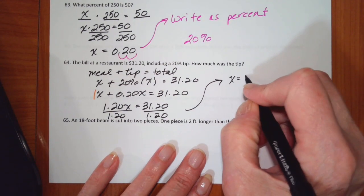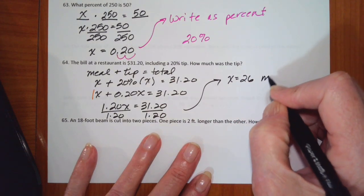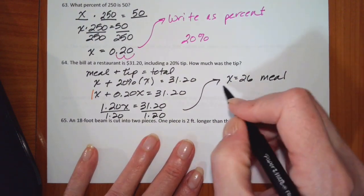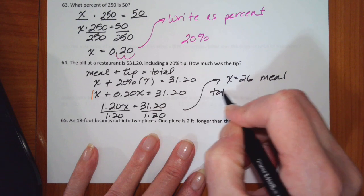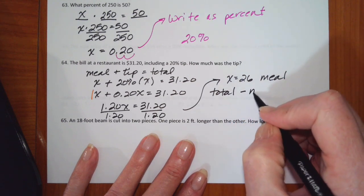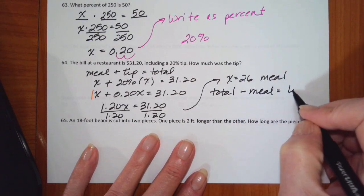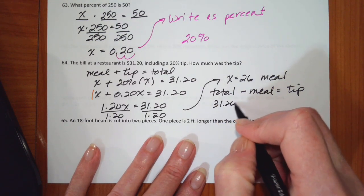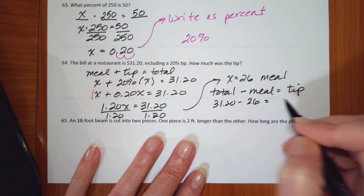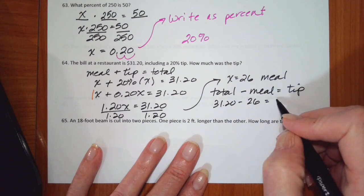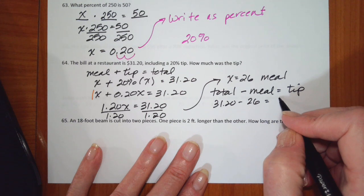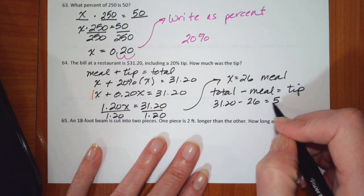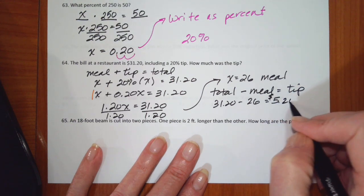So x is 26, which is the meal. So the total minus the meal is the tip. So $31.20 minus 26 gives us the tip, which is $5.20.